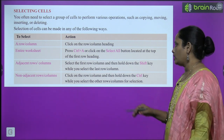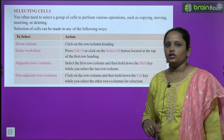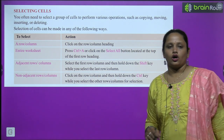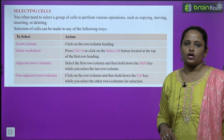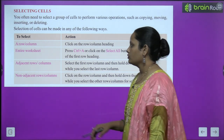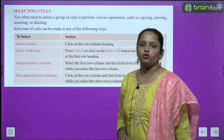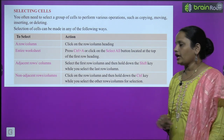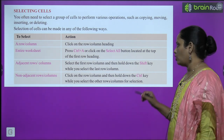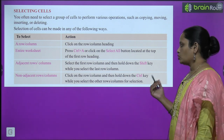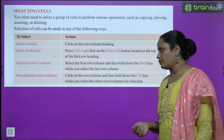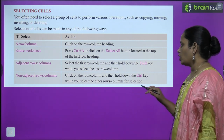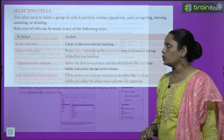Hold the Shift key, and when you select the last row or column, press the Shift key. For non-adjacent rows or columns — those which are not next to each other — click the row or column and then hold the Control key. Click the next row and column while pressing Control to select non-adjacent entries.